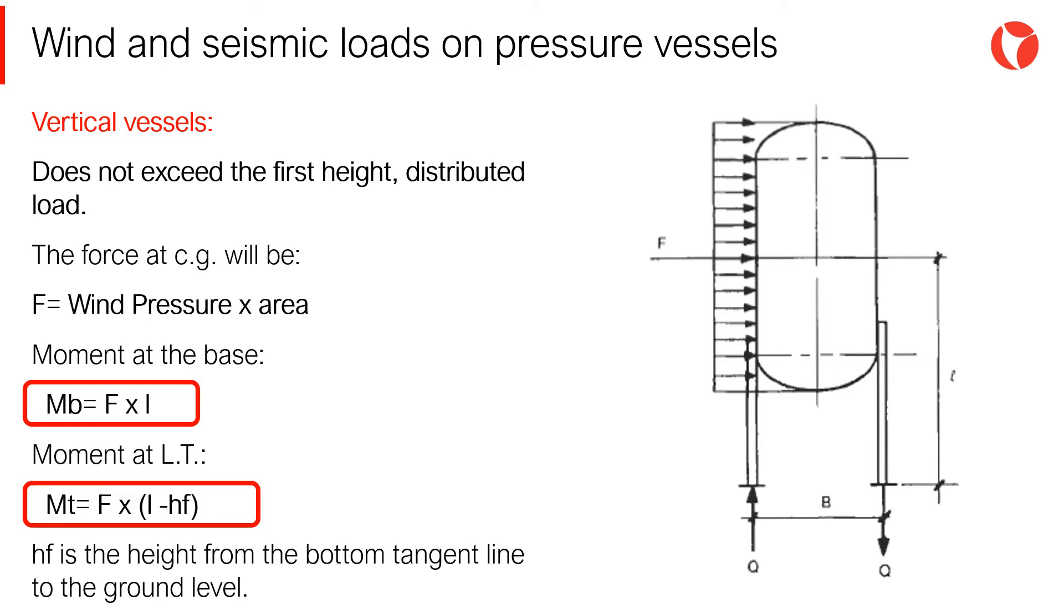The wind load, F, applied at the center of the cross section area of the equipment, will be the wind pressure times the cross section of the vessel.